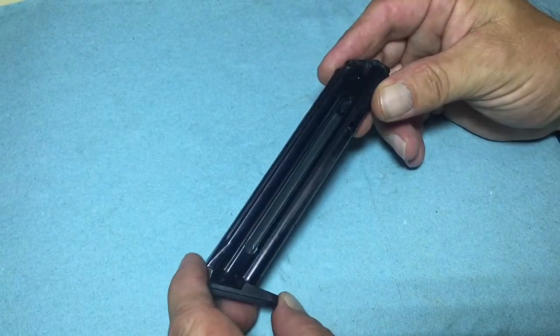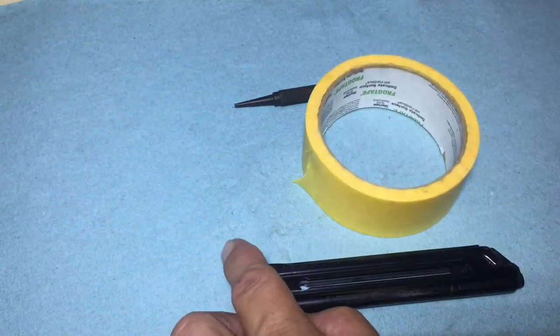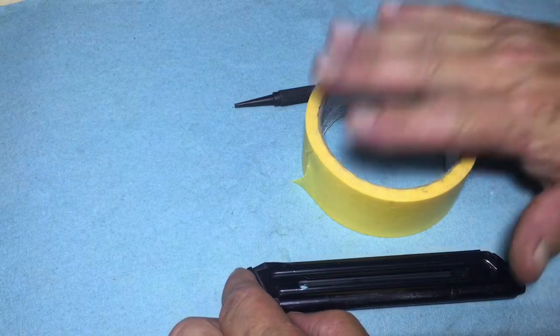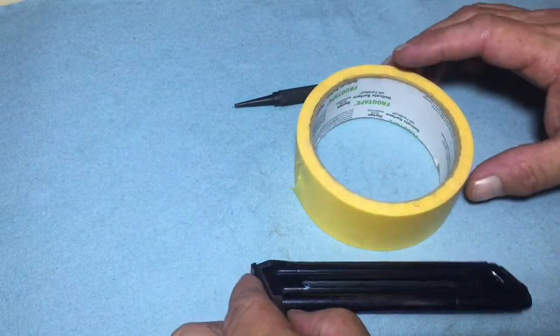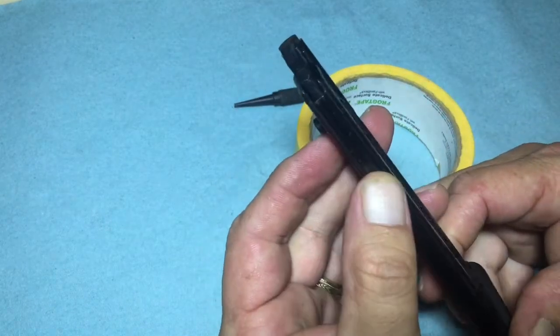What we'll need is a punch and some type of something to capture. I'm going to utilize this roll of tape here. What you'll notice is you will see on one side of the mag, the left side, this protruding area.